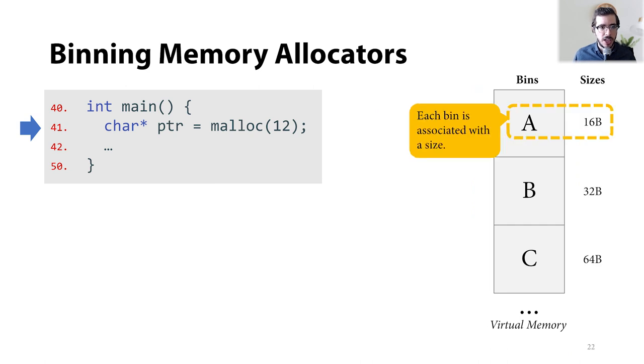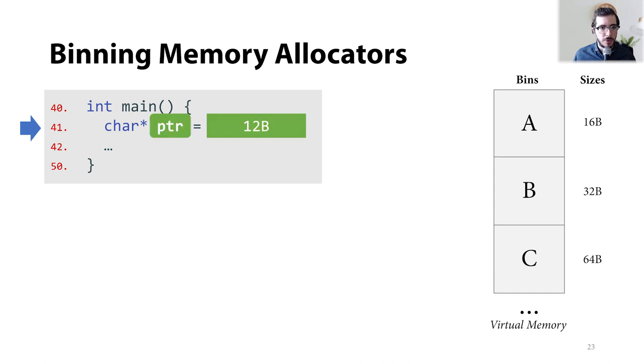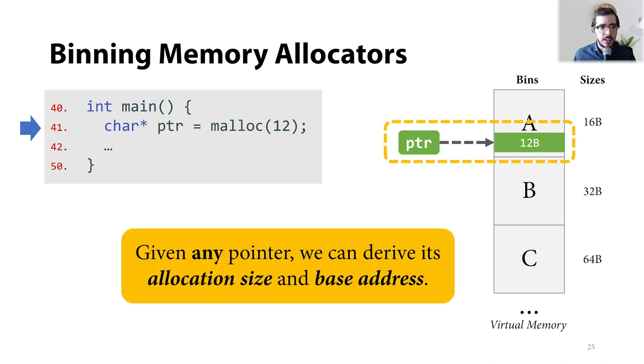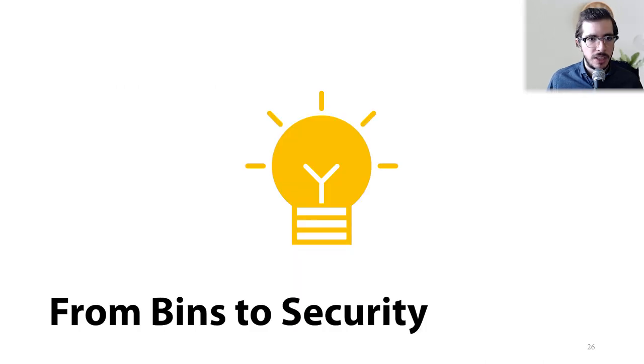Now, in order to accelerate the malloc functionality, binning memory allocators divide the virtual memory into different regions, called bins. Each bin is used to allocate objects of a specific size. For example, allocation requests that are less than 16 bytes come from region A. Allocation requests that are greater than 16 bytes and less than 32 bytes come from region B, and so on. As each region holds allocations of the same, rounded size, given any pointer, we can derive its allocation size and base address. Now, the allocation size is the size used in this particular region, whereas the base address is the nearest size-aligned address in the same region. Now, bear with me, and we'll flesh out the calculations in a bit. For now, it seems that binning allocators have some nice properties. But how can we use those properties and turn them into a security primitive?